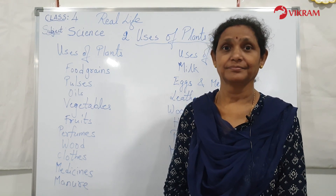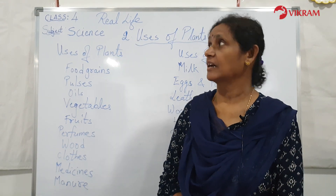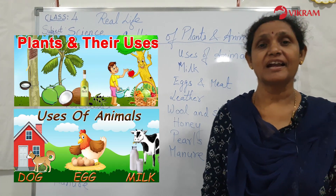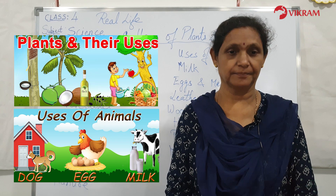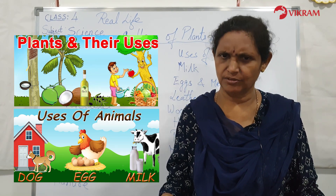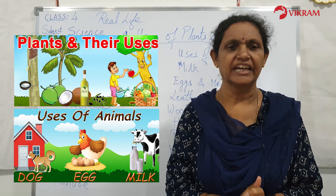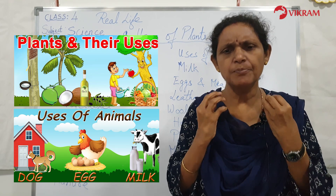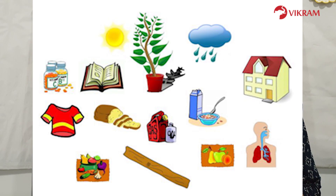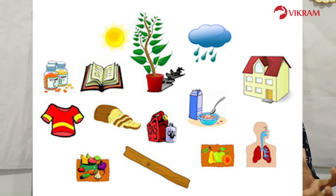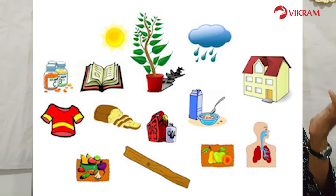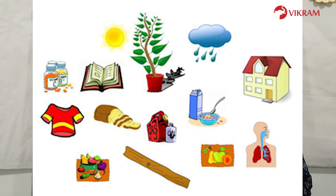Hi children, today we are going to do science class 4: uses of plants and animals. I'm Shailaja. We see many plants and animals around us; they play an important role in our lives and provide us with many things we need in our daily life. We get different products such as food, medicines, fuel, manure, wood, leather, silk, fur, spices, rubber, gum, etc. from them. It is only plants that prepare food for all living things on earth.